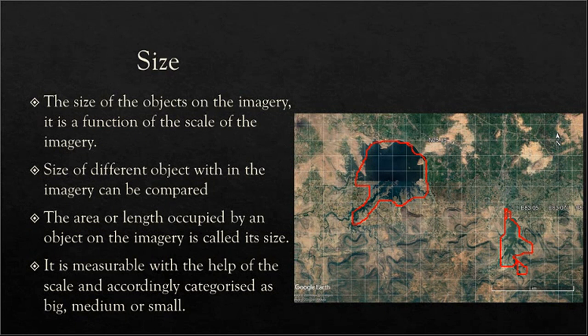Different objects on the imagery have different sizes, and this basically tells us about the area and the length of the object that it occupies in the imagery. It is a measurable quantity and is very much dependent on the scale.